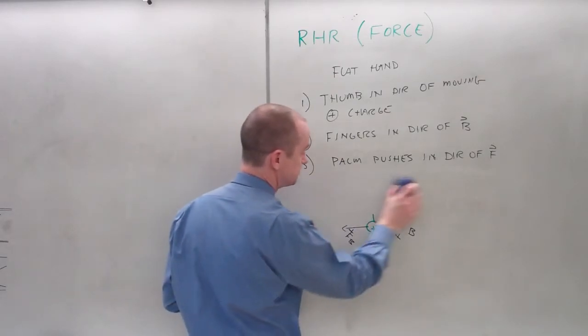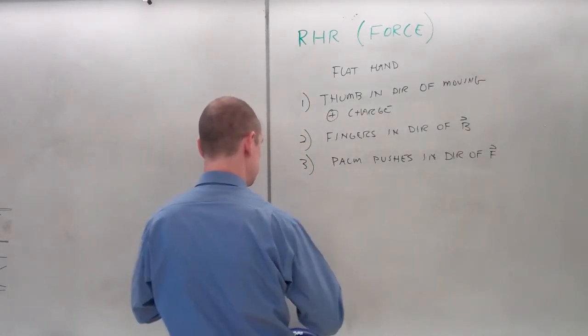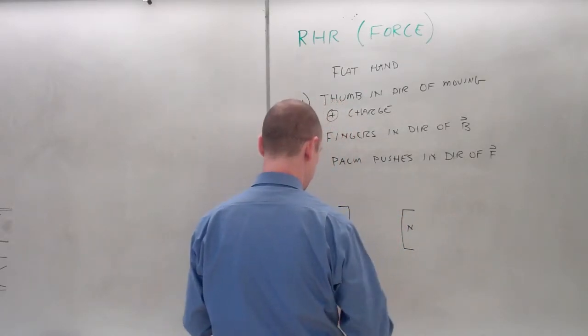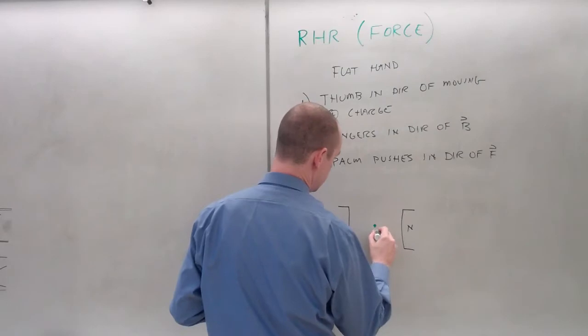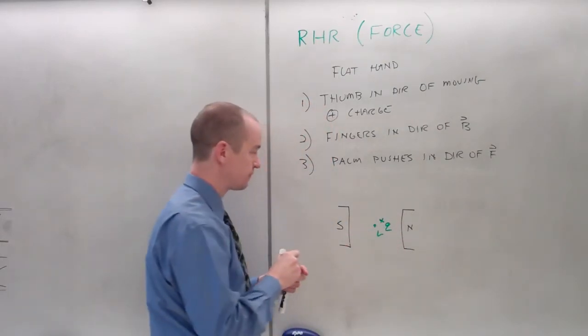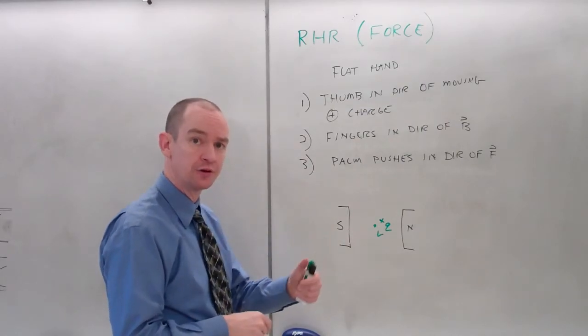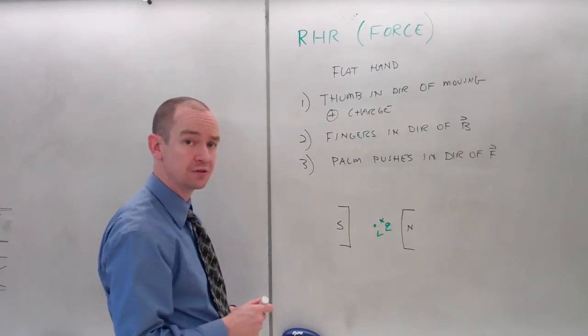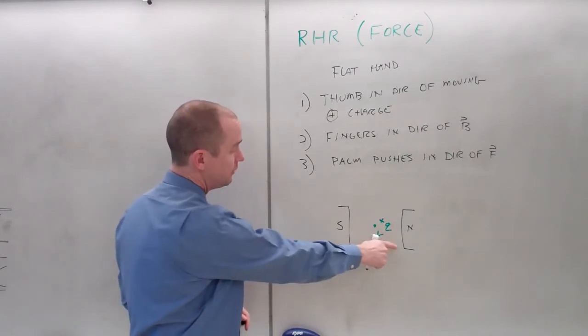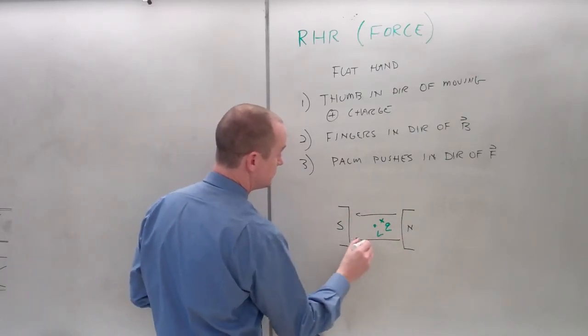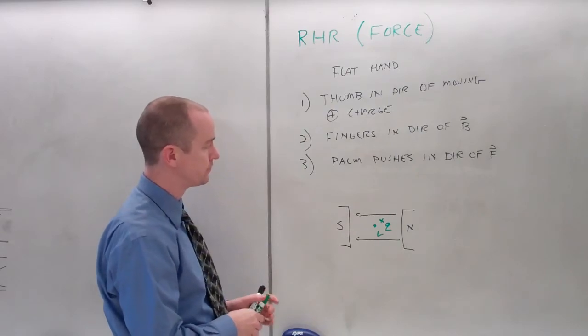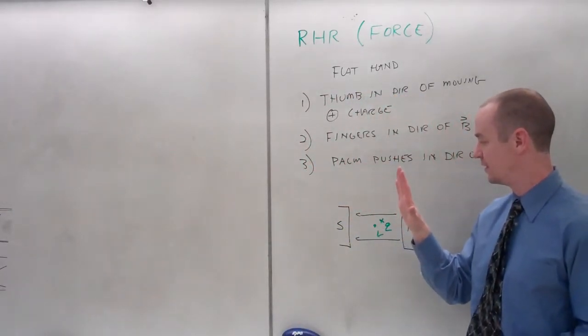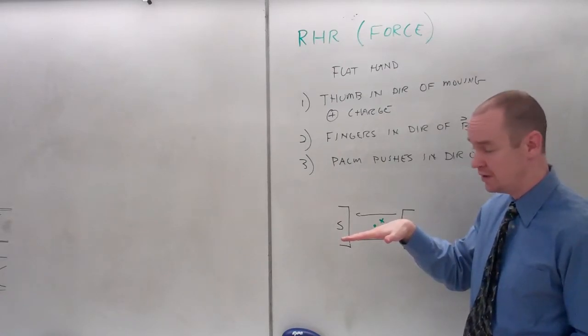Let's consider another example. I have a positively charged particle coming out of the board towards the camera. It is between two magnets. What's the force it experiences? First, I have to determine the direction of the magnetic field. Field lines run from north to south. V, flat hand. V, fingers in the direction of B. Palm points down.